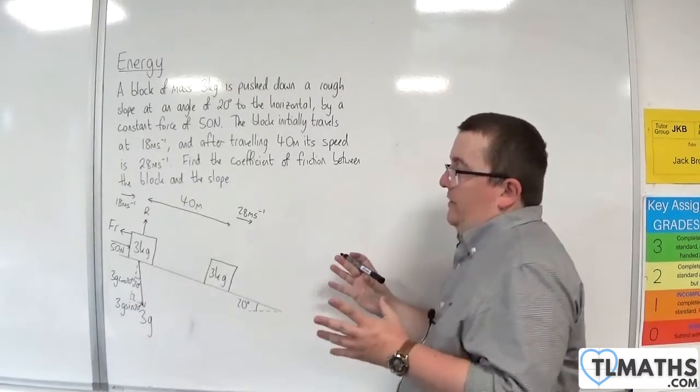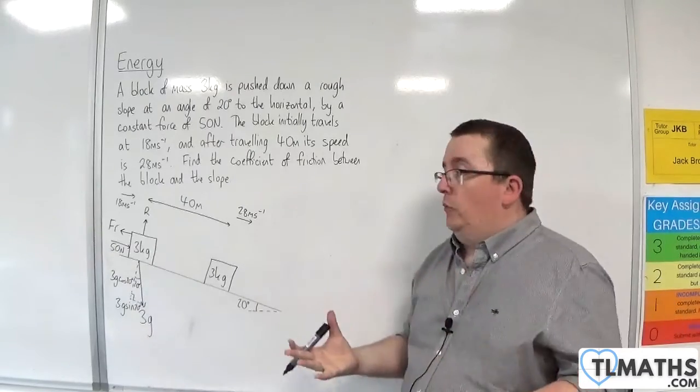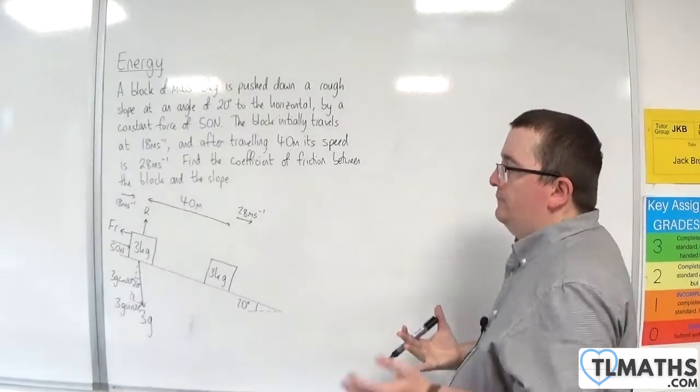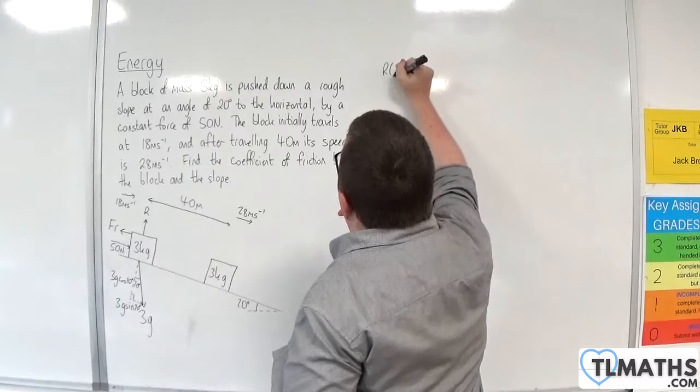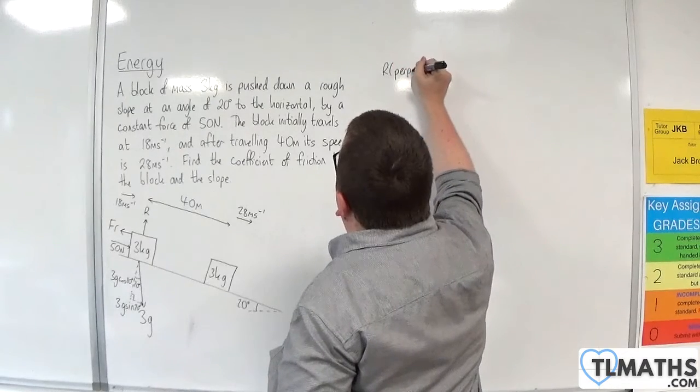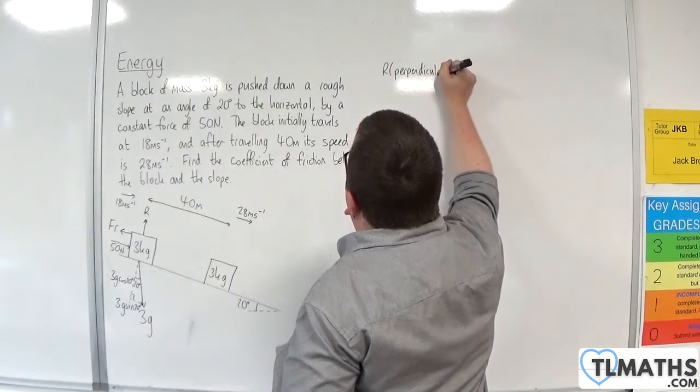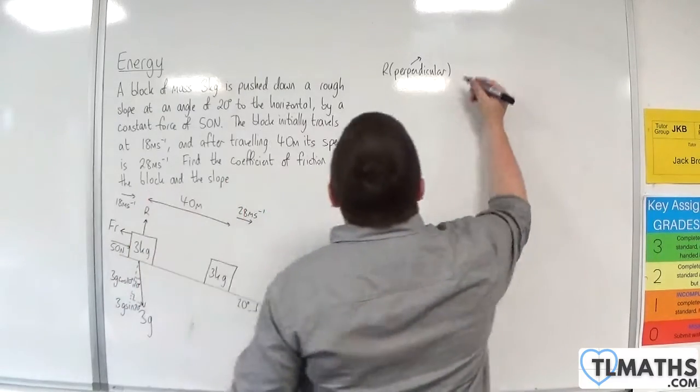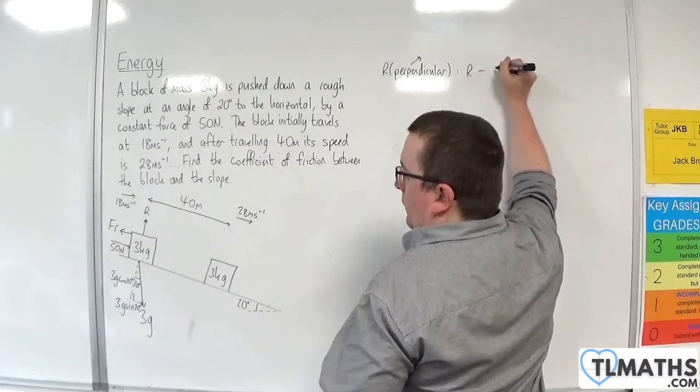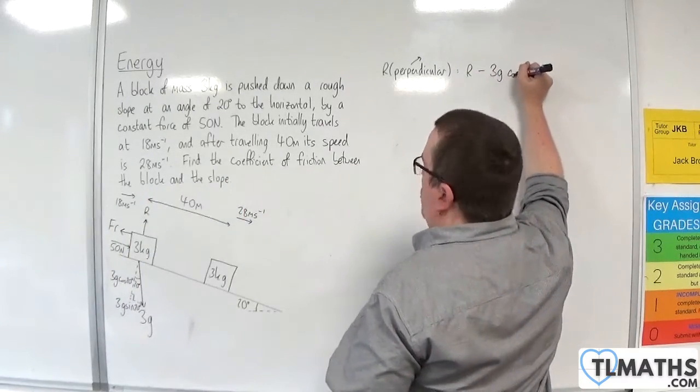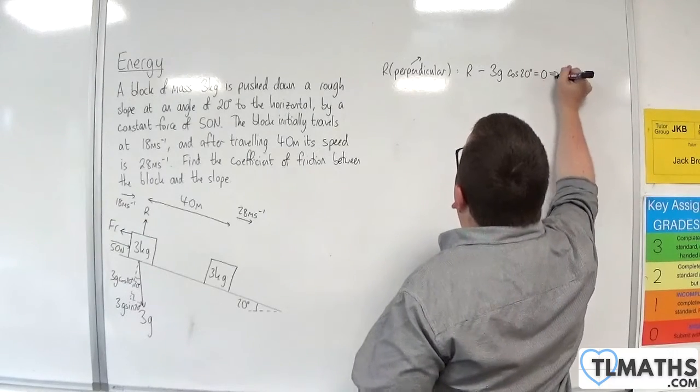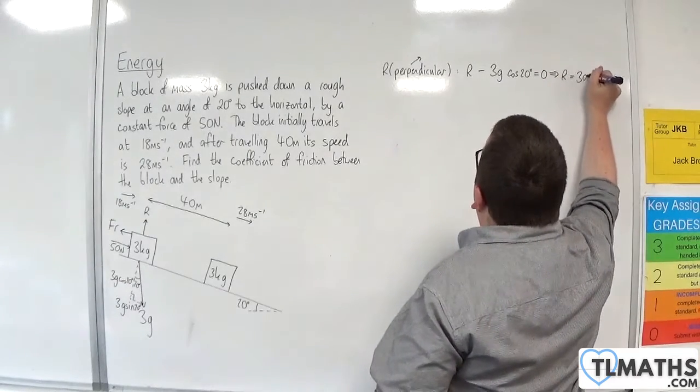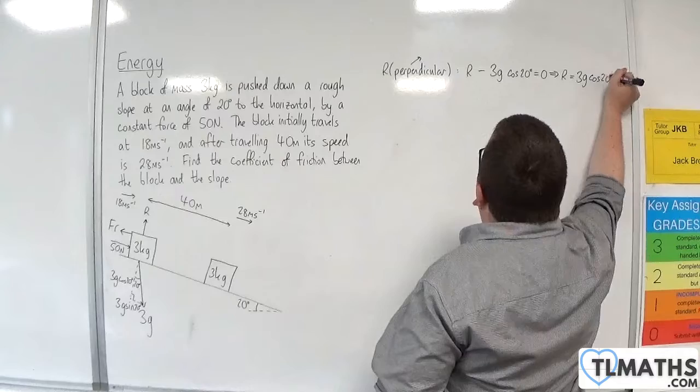So, what do I need? Well, I'm going to need that frictional force. I need to work that out. So, we're going to, first of all, resolve perpendicular to the slope, taking that direction as positive. So we have R take away 3G cosine 20 is equal to 0. So R is 3G cosine 20.